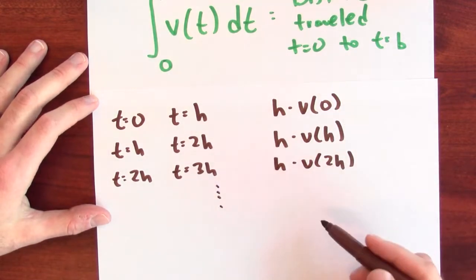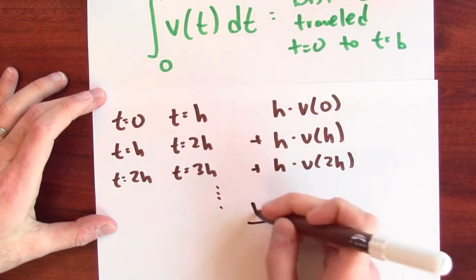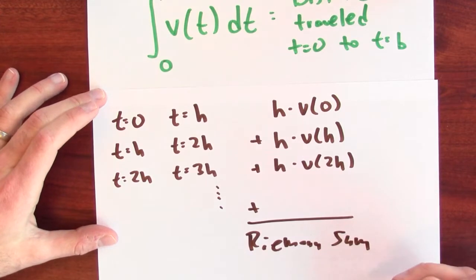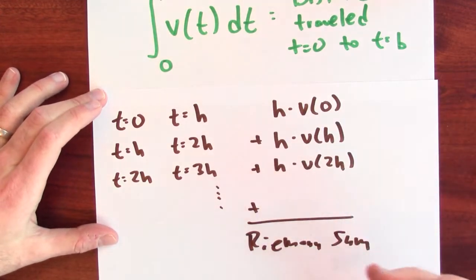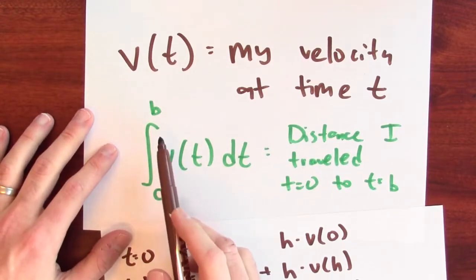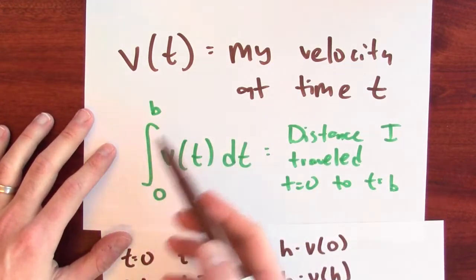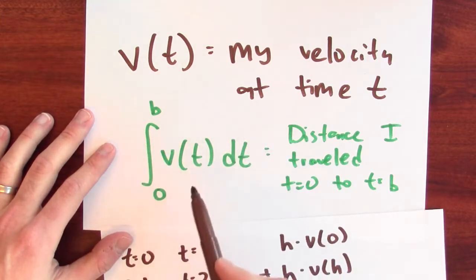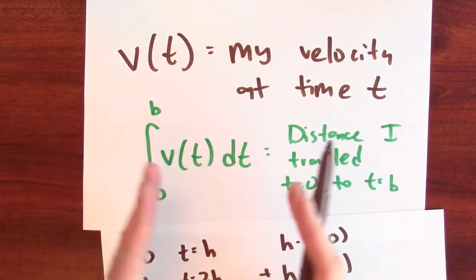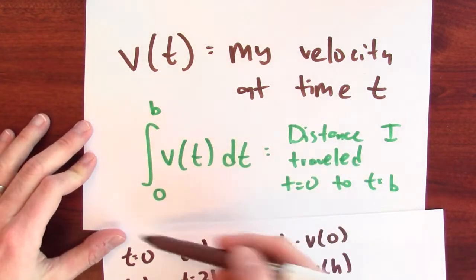And of course, this keeps on going. But what do I get if I add all of these things up? What I'm getting is a Riemann sum. And if I keep on adding these things up until I get all the way to b, what I'm writing down is the approximation for this integral, a particular Riemann sum which approximates this integral. And in the limit as h goes to 0, that Riemann sum will compute this integral.